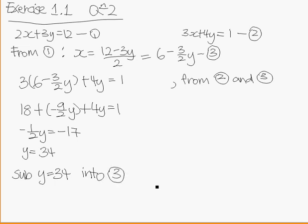This is from equation 3. So x = 6 - (3/2)(34).